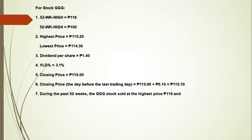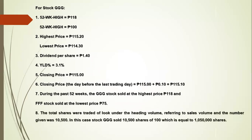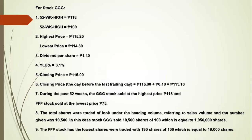Number seven: During the past 52 weeks, GGG stock sold at the highest price at 118 pesos, and FFF stock sold at the lowest price at 75 pesos. Number eight: GGG had a volume of 10,500 hundreds of shares, equal to 1,050,000 shares. Number nine: FFF stock had the lowest shares traded, with 190 hundreds of shares equal to 19,000 shares.